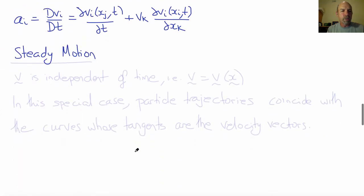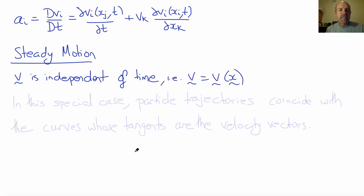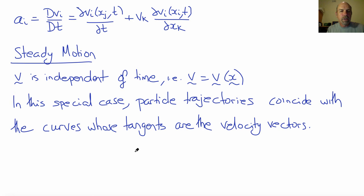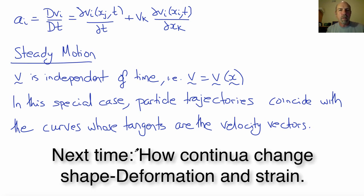There are some special cases of motion. A steady motion is one in which v is independent of time, so velocity is only a function of x. In this special case, the particle trajectories coincide with curves whose tangents are the velocity vectors. But if the velocity is unsteady, that's not the case. That concludes this introduction to kinematics of continua, in which we considered the motion of a single point. Next, we'll consider how a material continuum changes shape by considering the motion of neighboring points and what happens to the length and orientation of the vector that connects them.